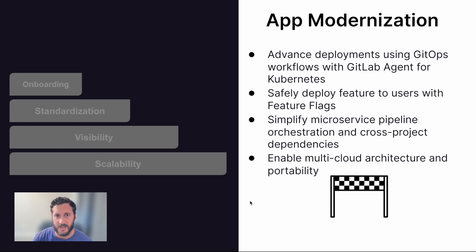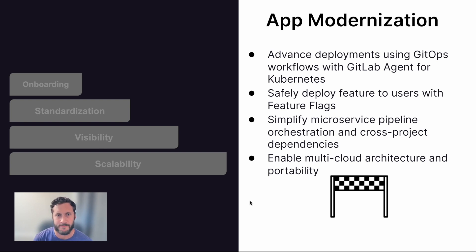Another topic with customers is managing microservice pipelines and cross-project dependencies. Pipeline orchestration can be handled across multiple projects to simplify downstream deployments. And lastly, if your organization is considering multi-cloud architecture, GitLab CICD is agnostic and plays well with various cloud providers, enabling portability between services.